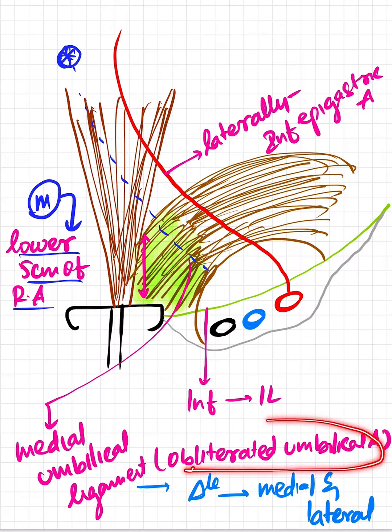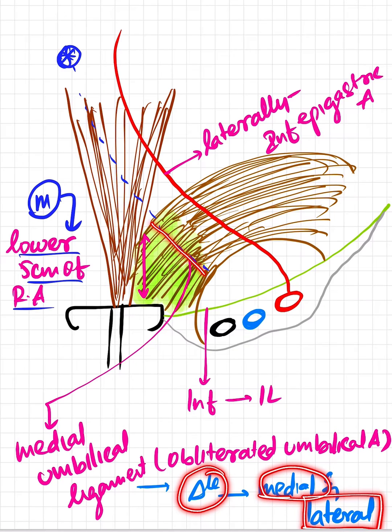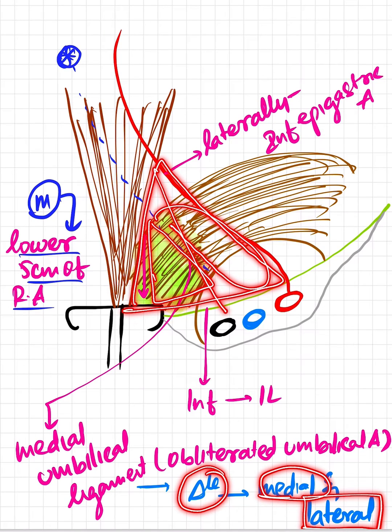This ligament divides the triangle into the medial part and the lateral part. This is a complete triangle—this becomes medial and this becomes lateral.